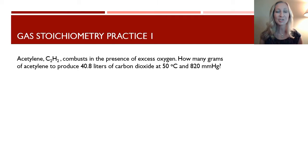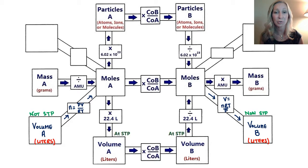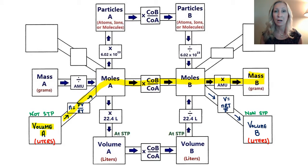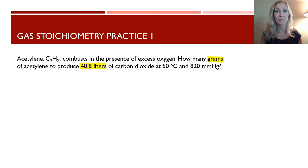Let's try a practice problem. We have acetylene C₂H₂ combusting in the presence of excess oxygen. How many grams of acetylene are needed to produce 40.8 liters of carbon dioxide at 50 degrees Celsius and 820 millimeters of mercury? We're given a volume and need to find a mass, so we start at volume of A and work our way to mass of substance B.